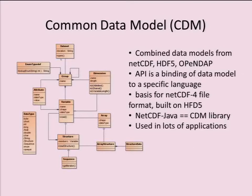One way to think about an abstract data model is what's an API — an API is a binding of that data model to a specific programming language. Once you've abstracted it to a data model, you can start porting it to other languages. This data model became the basis for our next version, NetCDF4, which is a file format built on top of HDF5. We use the term CDM library as a synonym for the NetCDF Java library. It's really the extended NetCDF API on top of a whole bunch of different file formats, and it's used in lots of Java applications.